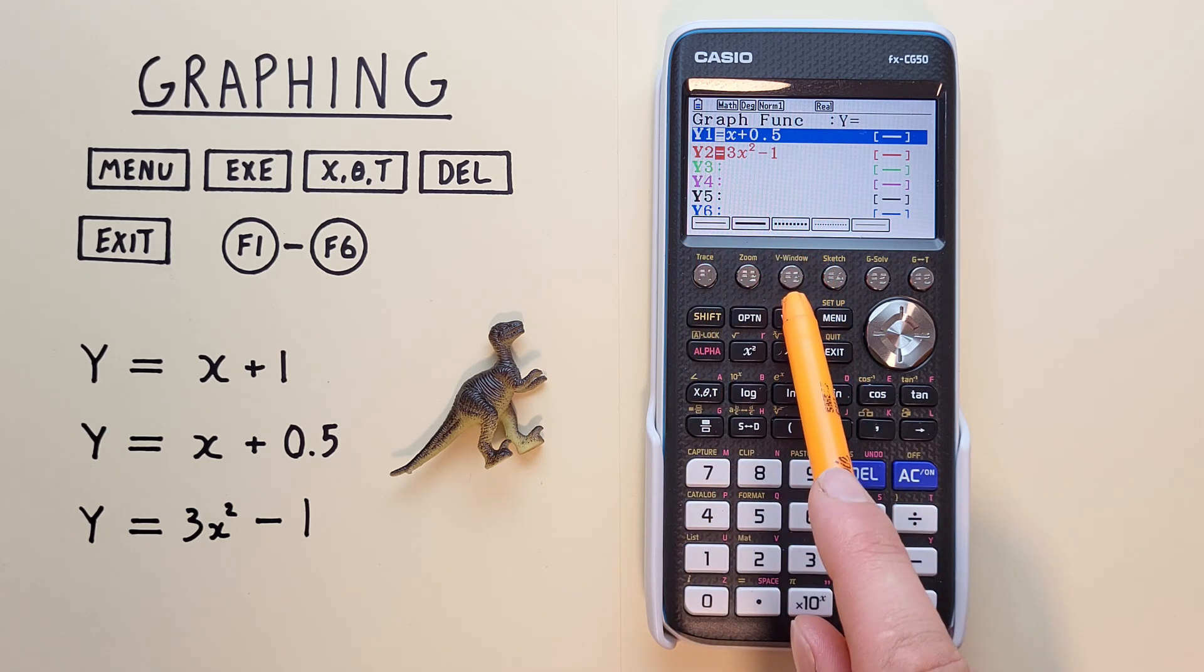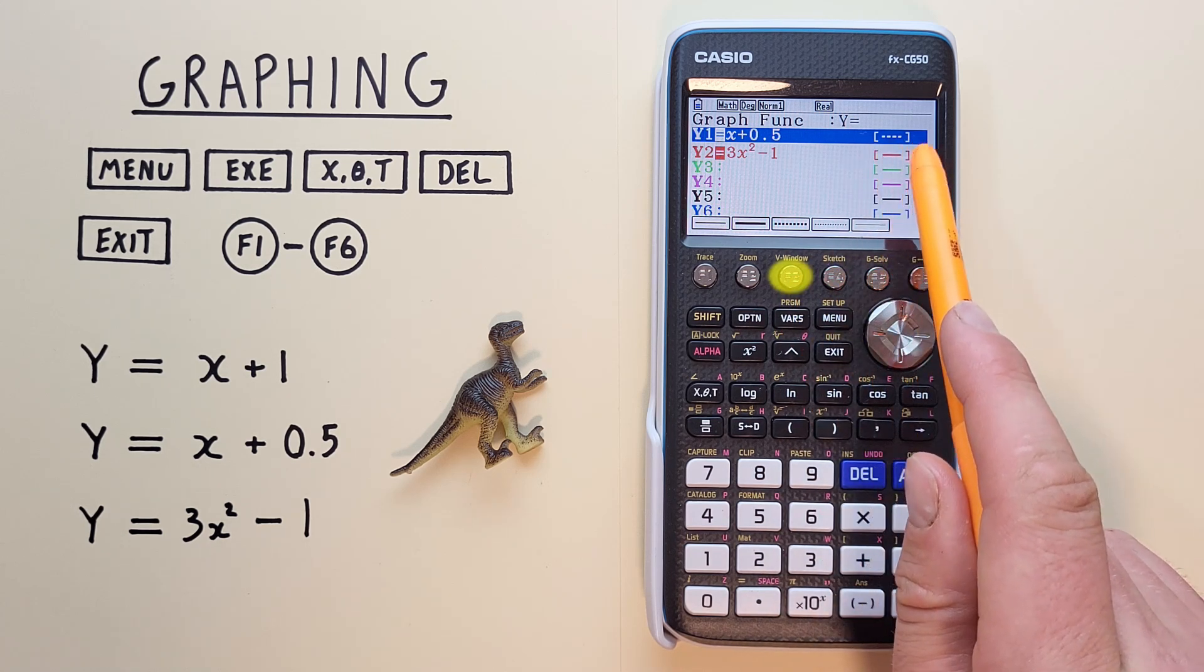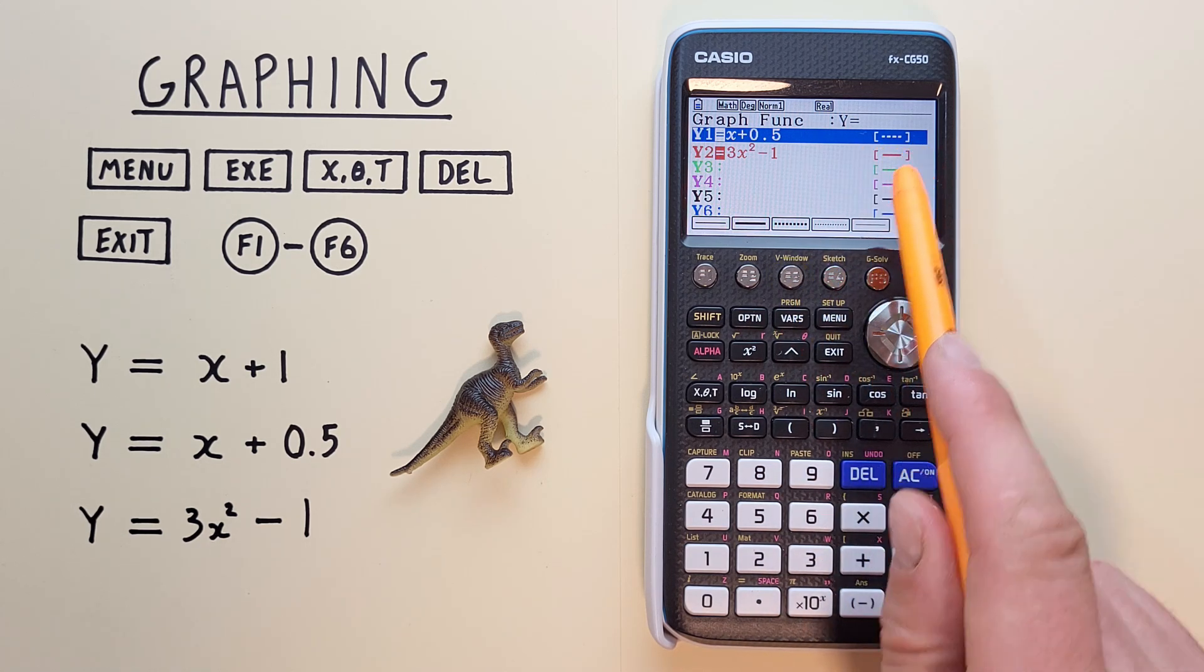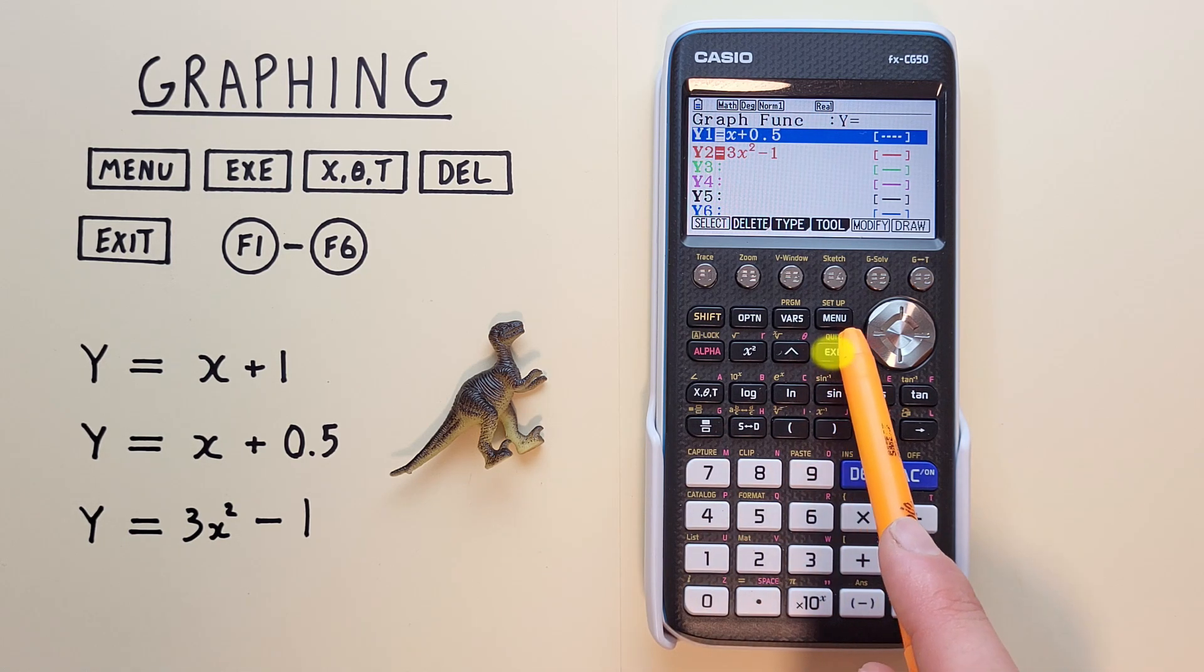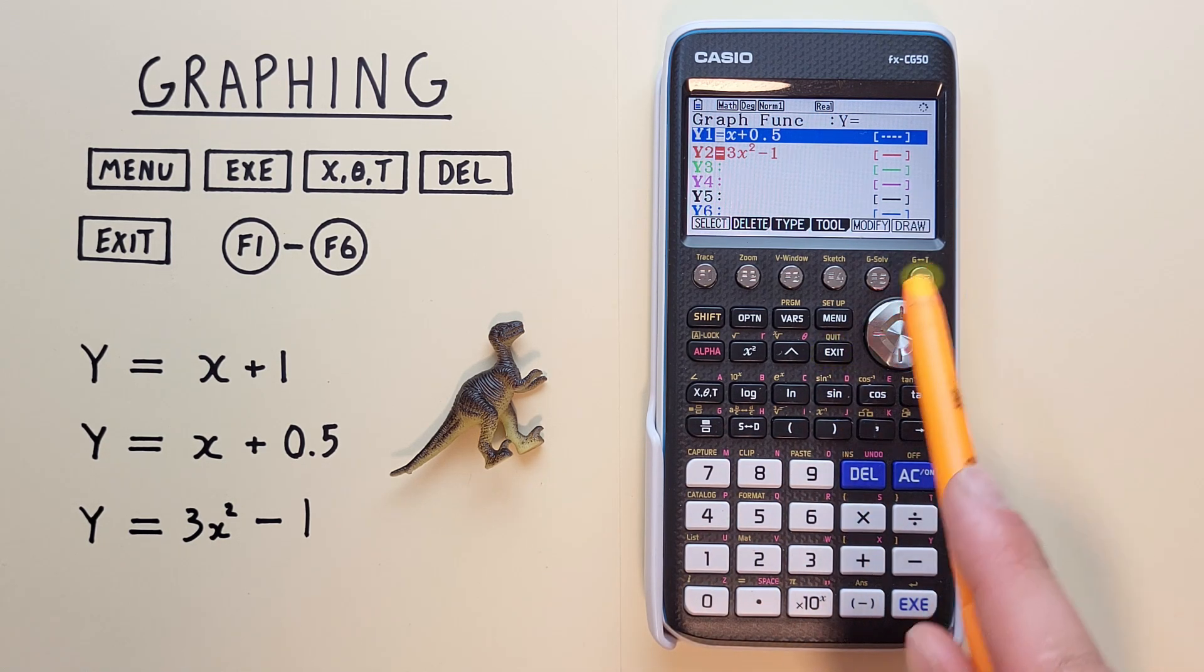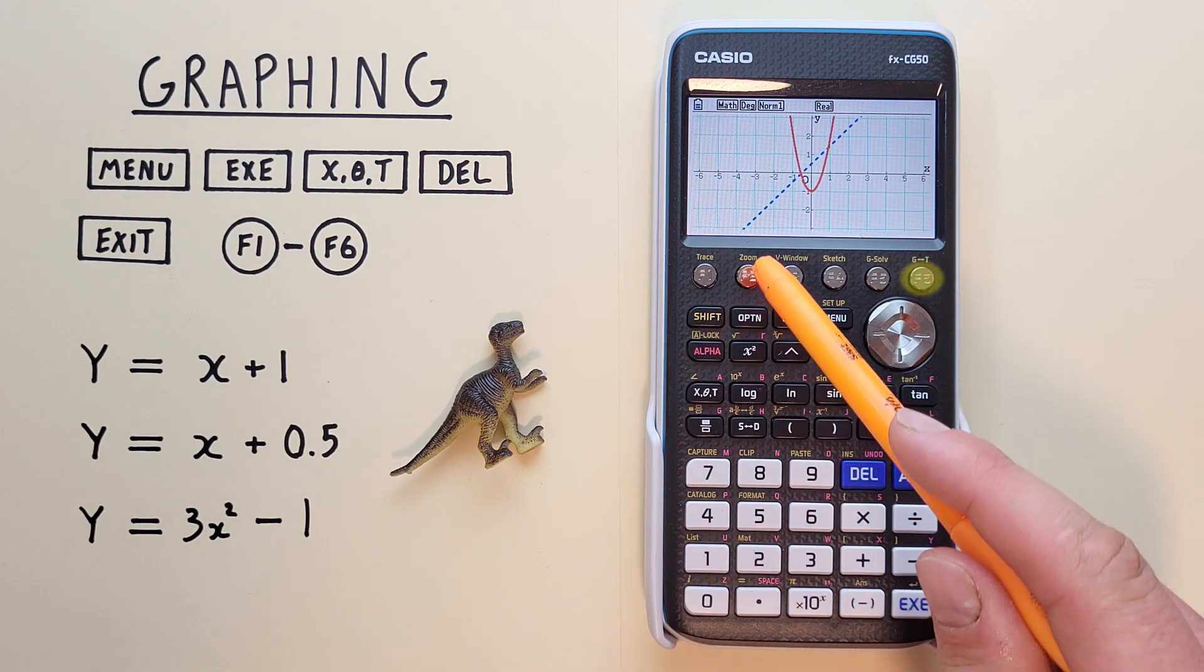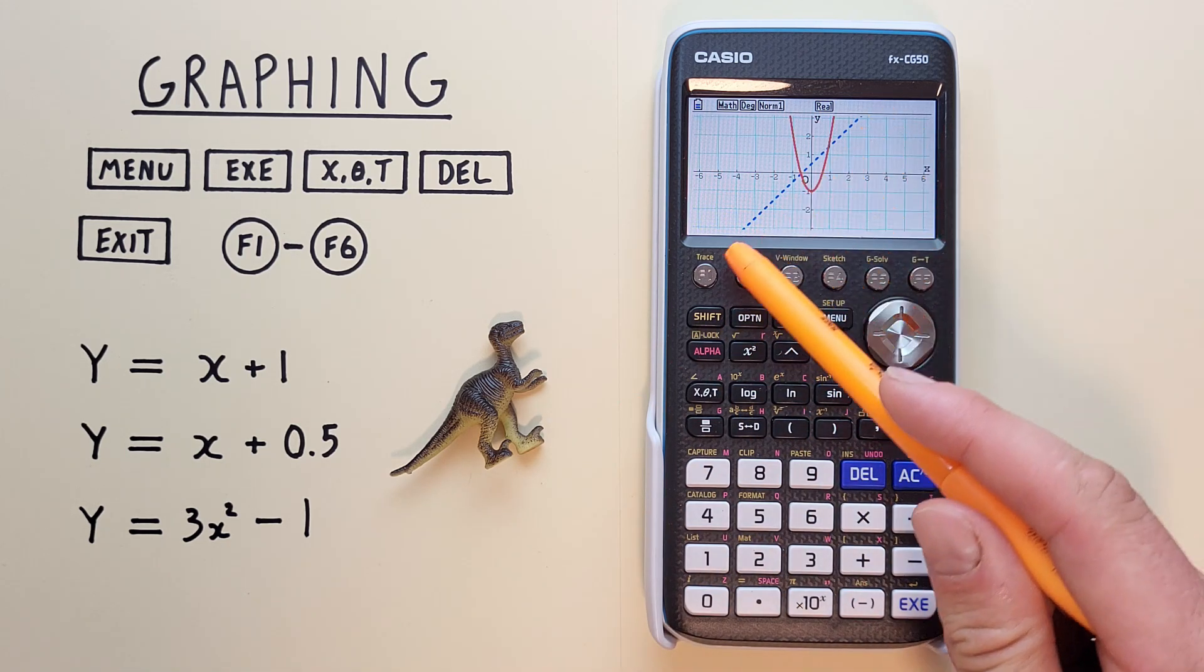And we see the different line work styles along the bottom here. Let's choose F3 here, this dotted line. We can see the example of the line work there. And then we can go back with the exit key, and hit F6 for Draw. And we see that Y1 is now a dotted line.